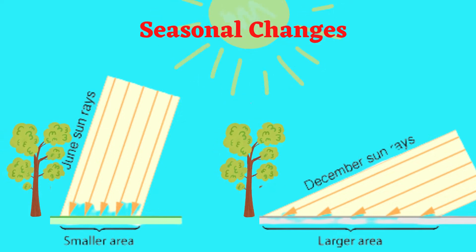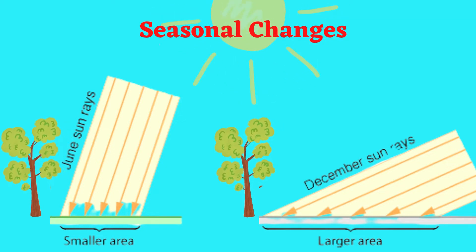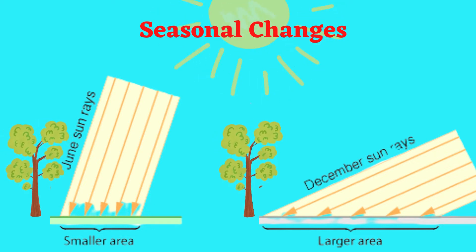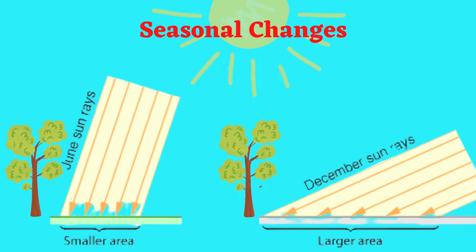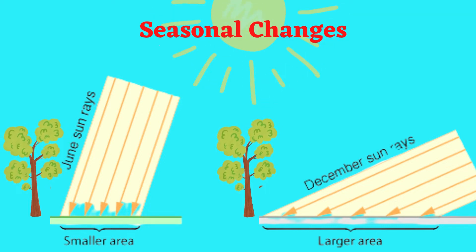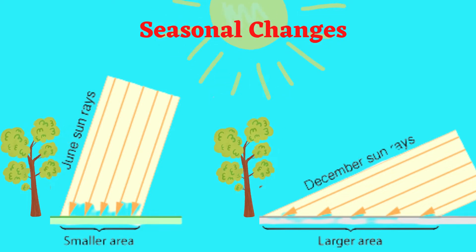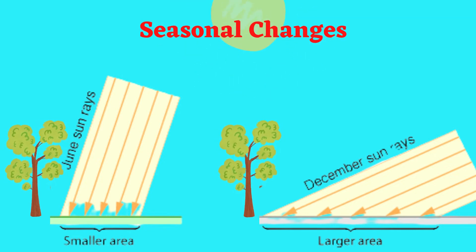In the summer, the overhead sun is higher in the sky, so more energy is concentrated in a smaller area, and the amount of solar energy received is greater. In the winter, when the overhead sun is at a lower angle, the solar energy has to be shared over a wider area, so less solar energy is received in any one place.